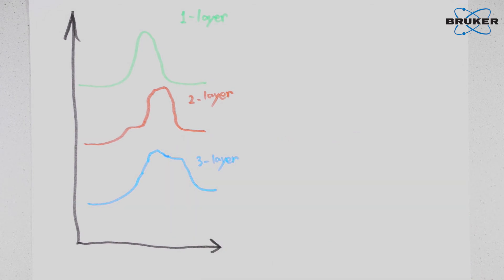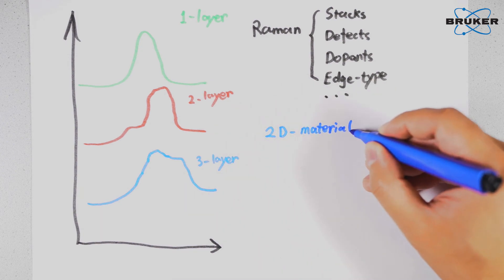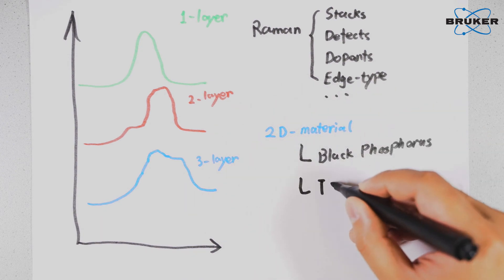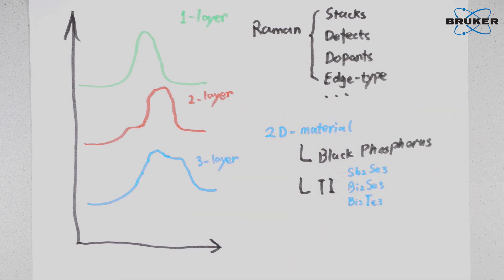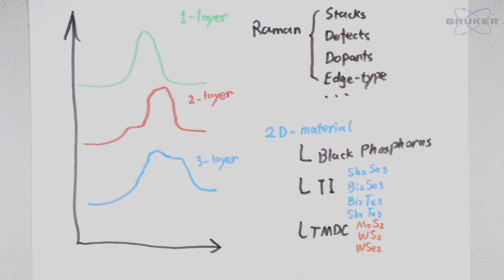Nowadays, Raman microscopy is already the standard method of graphene characterization, also providing other important information of stacks, defects, dopants, and each type of graphene and other family members of 2D materials.